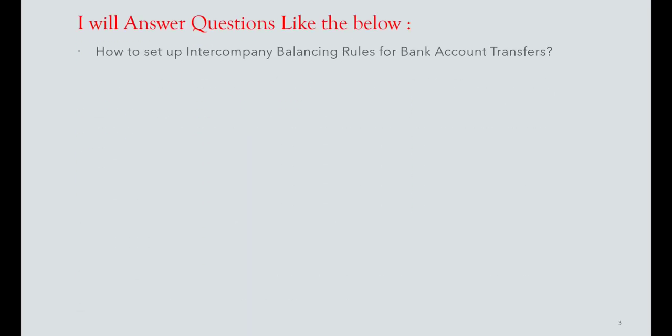How to set up intercompany balancing rules for bank account transfers: through Intercompany Balancing Rules, you define rules between two different legal entities — from Legal Entity X to Legal Entity Y — and put the payable and receivable accounts, choosing the category as 'Fund Transfer' in Cash Management. Do the same setup from Legal Entity Two back to Legal Entity One, with both payable and receivable accounts and the category as 'Fund Transfer,' to allow intercompany balancing for bank account transfers.